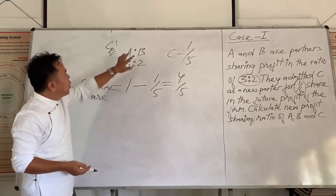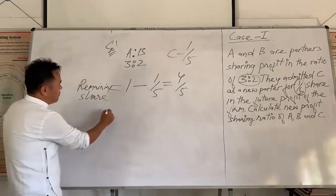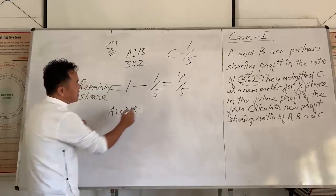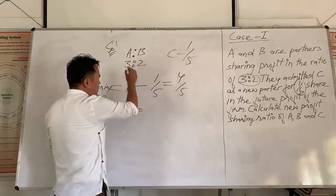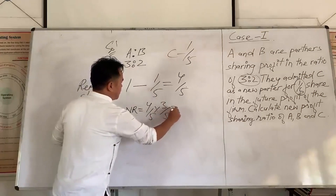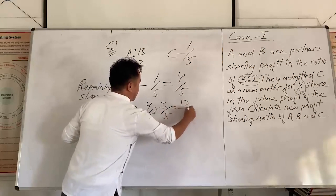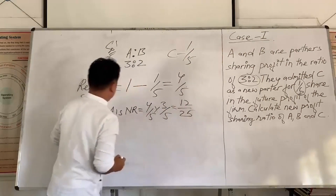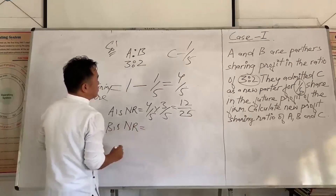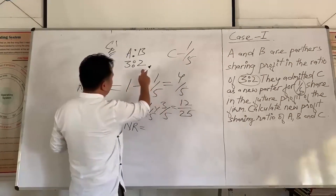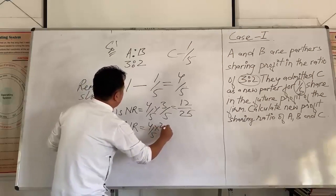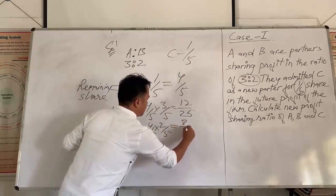By doing this we are going to get all partners' new ratio. A's new ratio: since 4 by 5 is acquired by both A and B in their own ratio, A's portion is 4 by 5 multiplied by 3 by 5, which gives 12 by 25. B's new ratio is 4 by 5 multiplied by 2 by 5, which gives 8 by 25. C's share is already given as 1 by 5. To convert fractions into ratio we make all denominators the same — multiplying 1 by 5 gives 5 by 25.